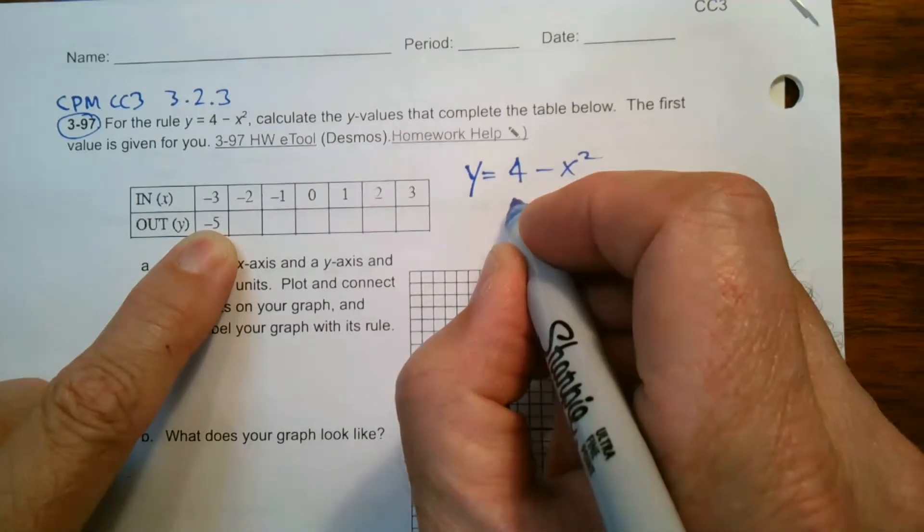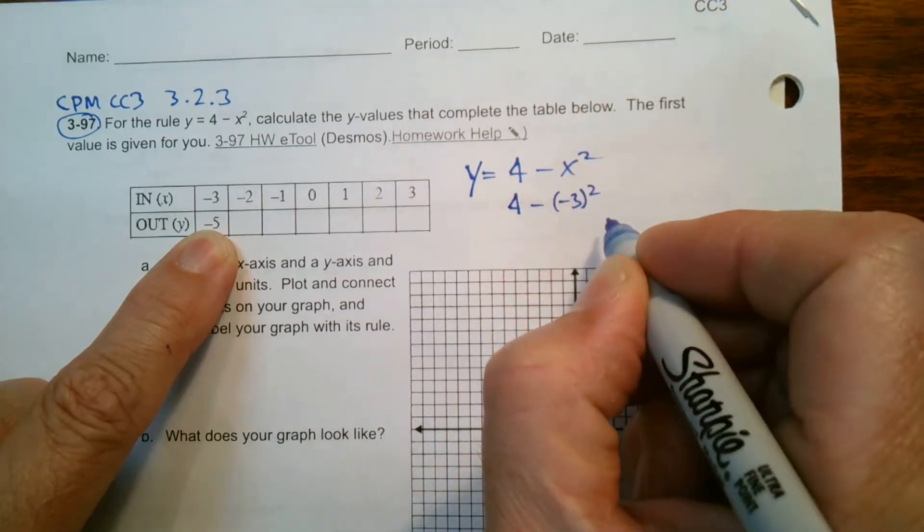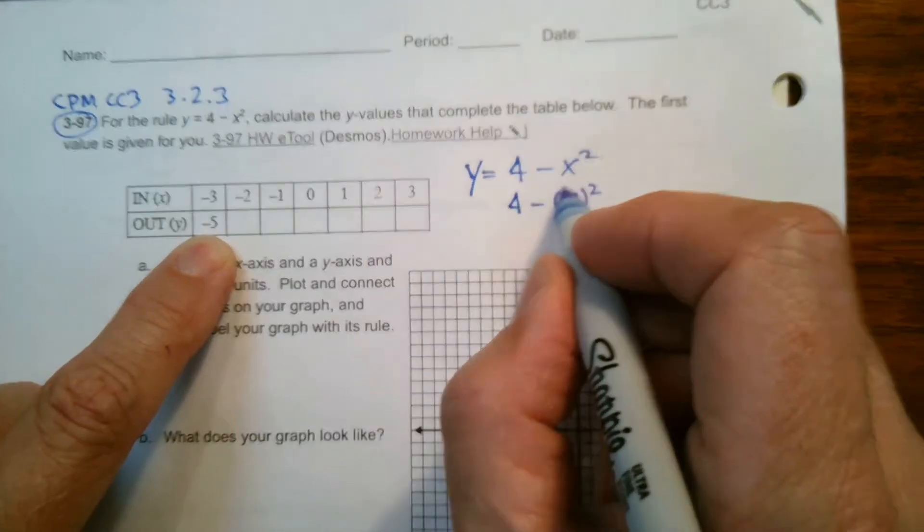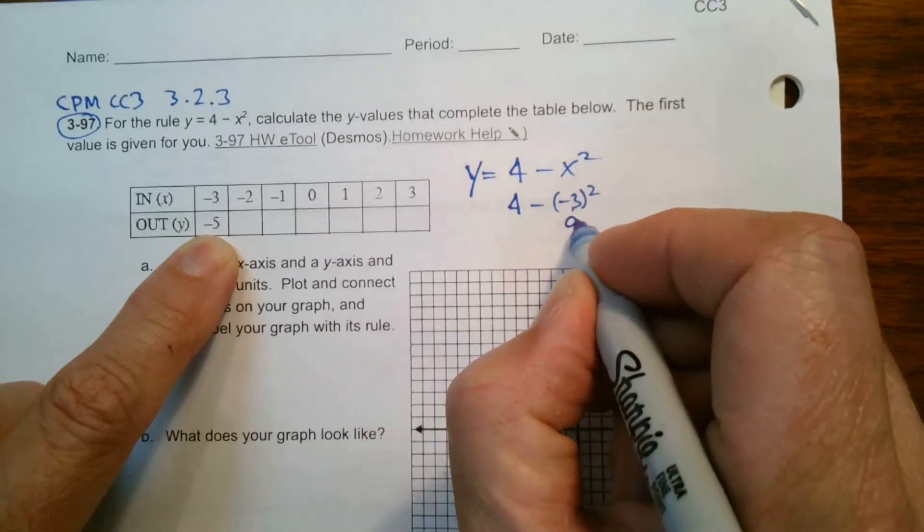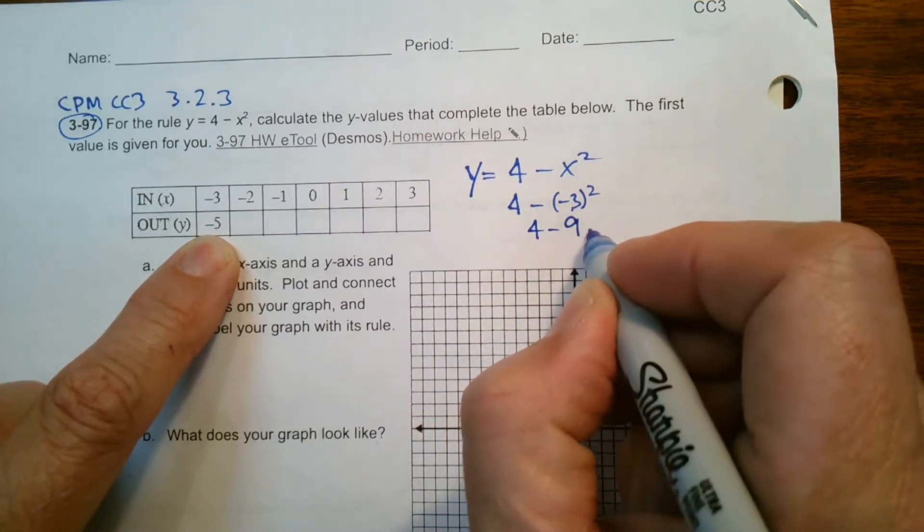So negative three, what that means is if I take four, subtract negative three squared, I'm going to get negative five. So four minus, well, first of all, we do the exponent. Negative three times negative three is positive nine.